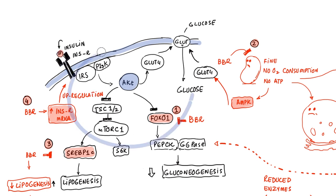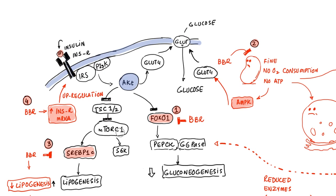This is called a second messenger system — the first messenger being the hormone itself, and the second messenger being the response within the cell. When the insulin receptor becomes activated, it causes insulin receptor substrate enzymes to become activated. That activates PI3K, an enzyme attached to the internal side of the cell membrane. PI3K then activates another enzyme called AKT, which is the central hub of the response.